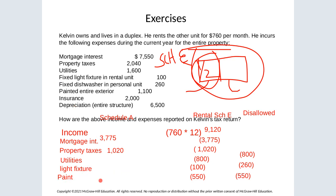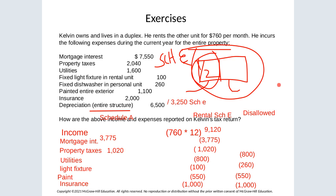Insurance can be split, but insurance is not an itemized deduction, so $1,000 is a rental expense and the other $1,000 is disallowed. For depreciation on the entire structure, only half — $3,250 — can be deducted on Schedule E; the other half is disallowed. The result is Schedule E captures the rental expenses, Schedule A captures mortgage interest and property taxes, and everything else personal is not deductible.